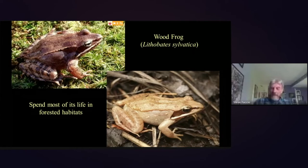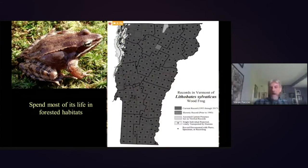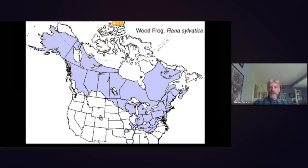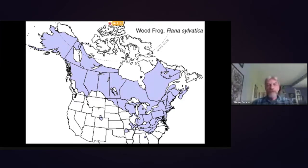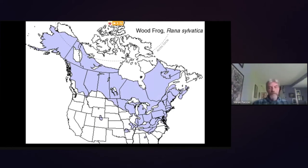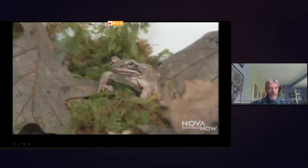The wood frog is very widely distributed in Vermont and the Northeast, spending most of its life in forests — hence its name. It has a wide distribution across North America, and is the furthest north-ranging frog we have, reaching north of the Arctic Circle to the Arctic Ocean. Wood frogs, along with spring peepers, gray tree frogs, and a few other species, have a unique overwintering strategy: instead of overwintering in the bottom of ponds or underground, they freeze solid.